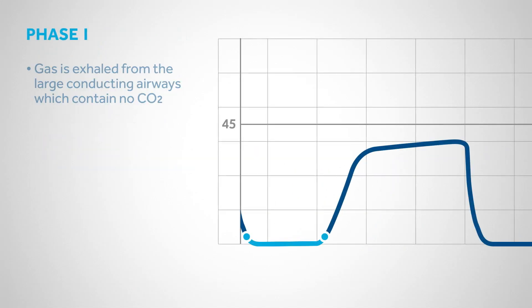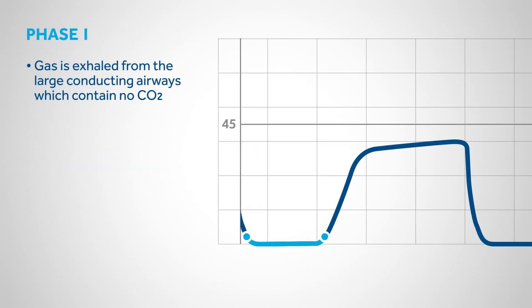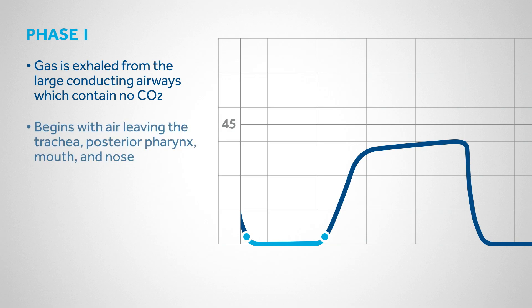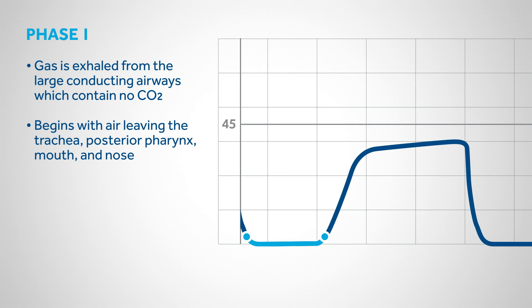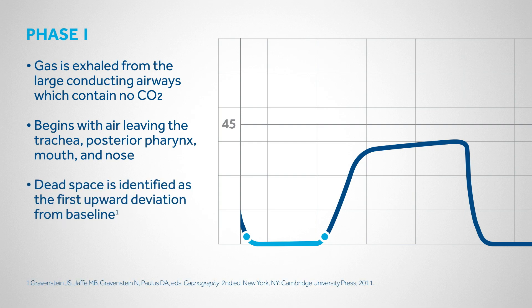During Phase 1, gas is exhaled from the large conducting airways, which contain essentially no carbon dioxide. The exhalation cycle begins with air leaving the trachea, posterior pharynx, mouth, and nose. This is called dead space because no gas exchange occurs. Dead space is identified as the first upward deviation from baseline.